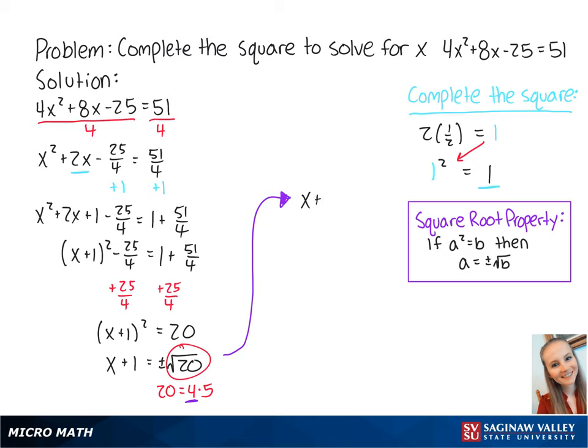So now we have x + 1 = ±2√5. And if we subtract 1 from both sides, we get x = -1 ± 2√5. So x = -1 + 2√5 or -1 - 2√5, and this is the final answer.